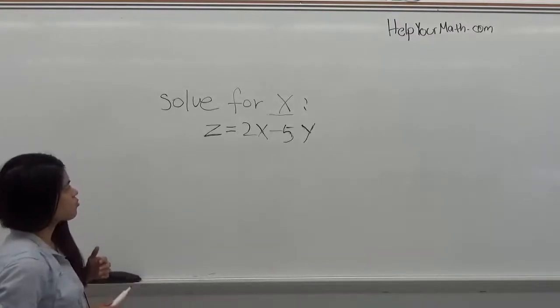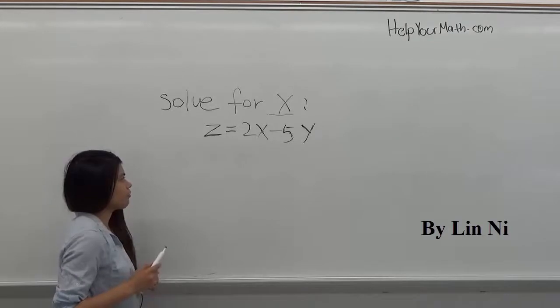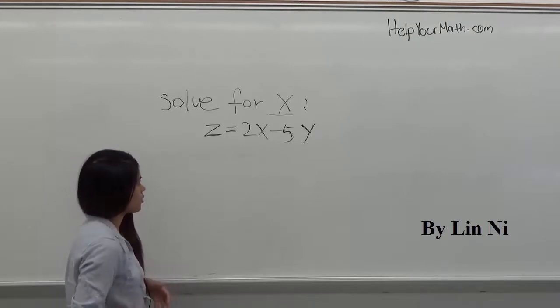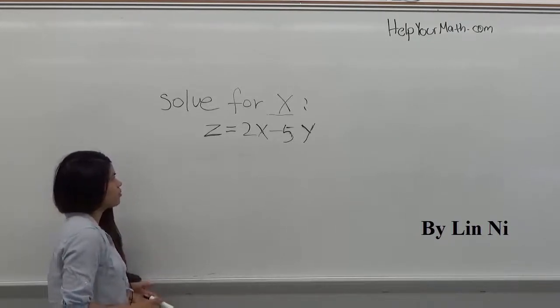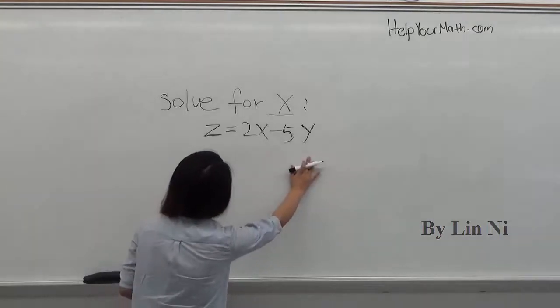OK, today I'm going to introduce how to solve for x when there is more than one variable in an equation. So start with the problem z equals 2x minus 5y.